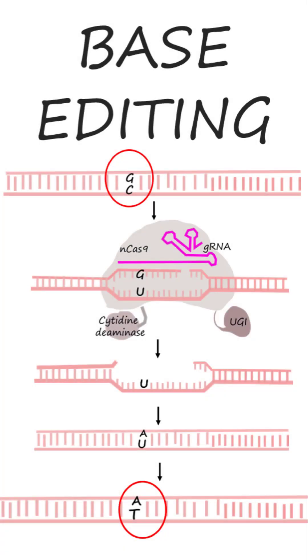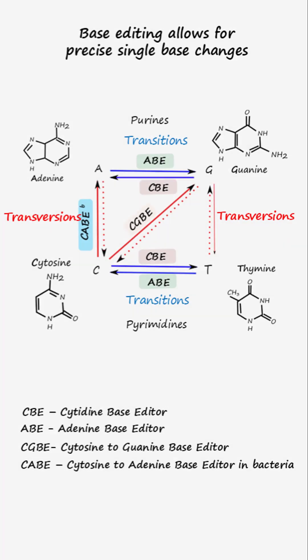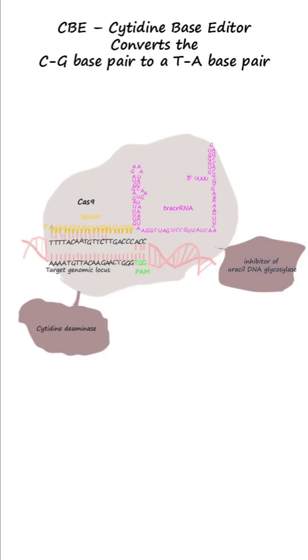Base editing is one of the CRISPR-based methods developed for genetic modification. Base editing allows for precise single-base changes in DNA, such as the transition of the pyrimidine cytosine to the pyrimidine thymine — in other words, conversion of the cytosine-guanine base pair to a thymine-adenine base pair.